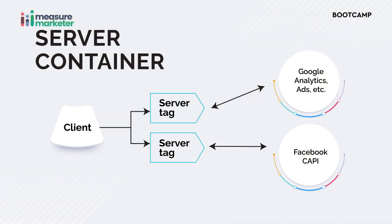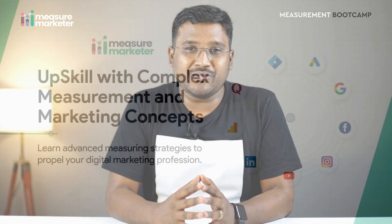Once our GTM, which is configured in the cloud and mapped to our subdomain, receives that request, the GTM server-side container does all the operations. There is something called a client inside the GTM server-side container — the client accepts the request and forwards it to the endpoint, which is the Google Analytics server. This is how we circumvent ad blockers and still find a way to send data to analytics servers with server-side tagging.